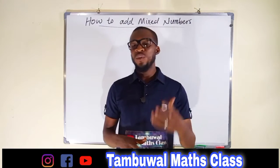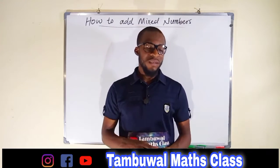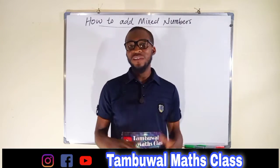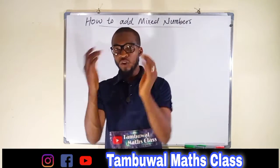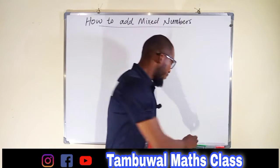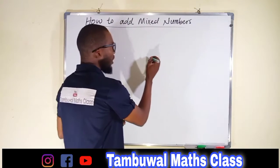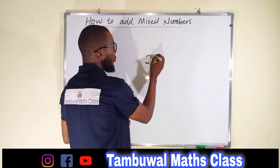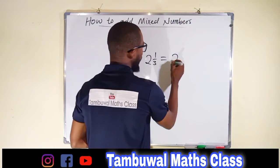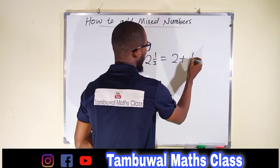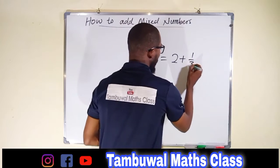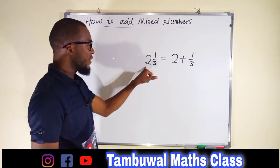Before we start, I want you to understand that every mixed number can be expressed as the sum of its whole number and its fraction. For example, 2 and 1 over 3 can be written as 2 plus 1 over 3. If you simplify this, you are going to obtain the mixed number back.